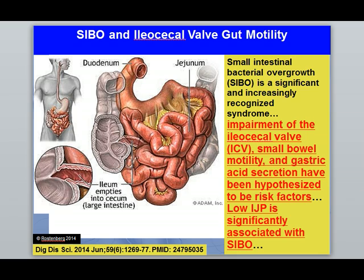A brand new study from 2014 says SIBO is a growing problem, and that impairment of the ileocecal valve and gastric acid secretion are risk factors. Low ileocecal valve strength is significantly associated with SIBO. This muscle where your small intestine and large intestine meet — dysfunction and weakness there predisposes bacteria living in the colon to crawl up into the small intestine. Think of it like a door left open: the bugs that live there just fill up the space, and there's a lot of nutrition up there for them to grow.